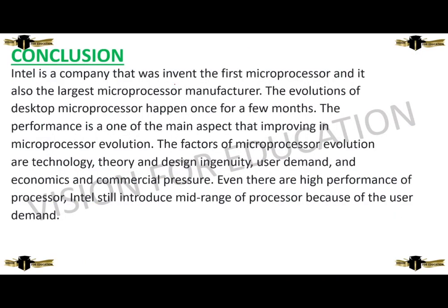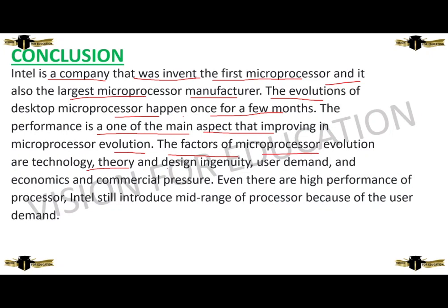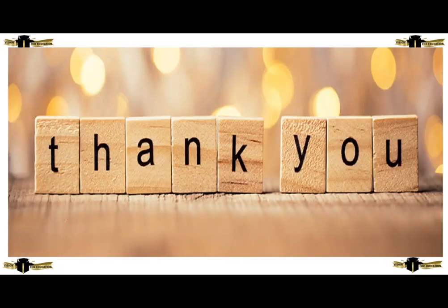Coming to the conclusion: Intel is a company that invented the first microprocessor and is the largest microprocessor manufacturer. The evolution of desktop microprocessors happens once every few months. Performance is one of the main aspects improving in microprocessor evolution. The factors of microprocessor evolution are technology, theory, design integrity, user demand, economics, and commercial pressures. Even with high-performance processors available, Intel still introduces mid-range processors because of user demand.